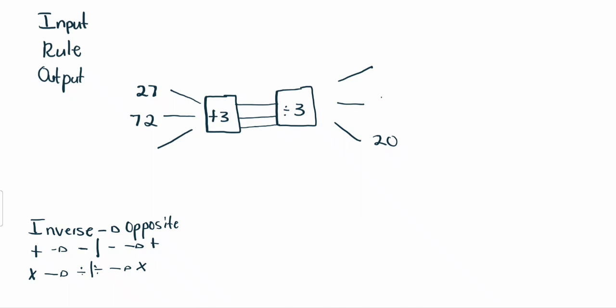Okay, now let's work it out together. So, we have 27 plus 3, which will give us 30 divided by 3. 30 divided by 3 will give us 10. Let's go to the second one. 72 plus 3 will give us 75. 75 divided by 3 will give us 25.